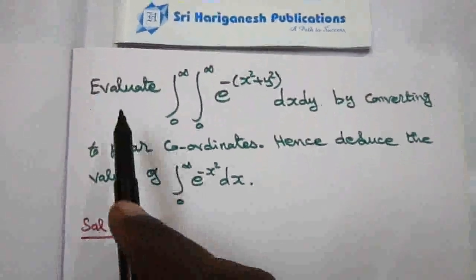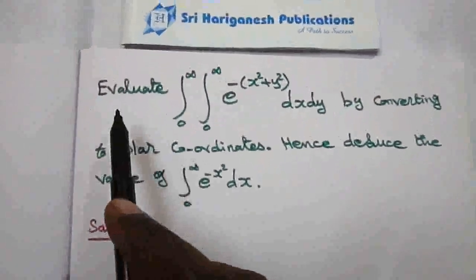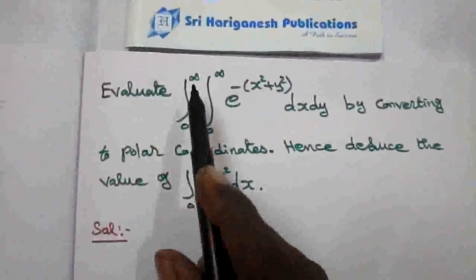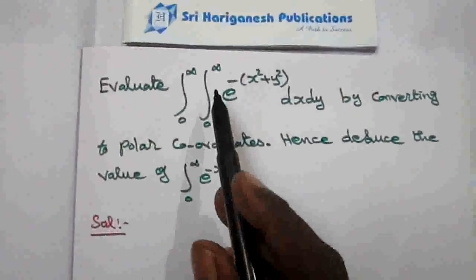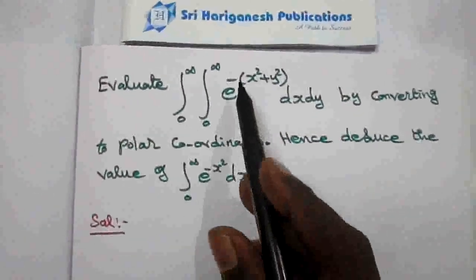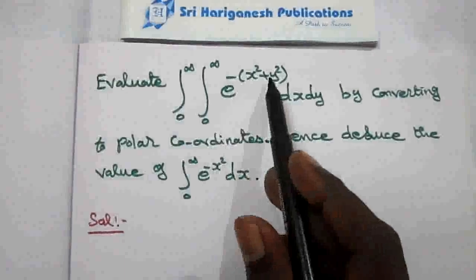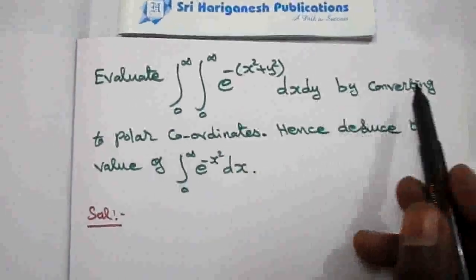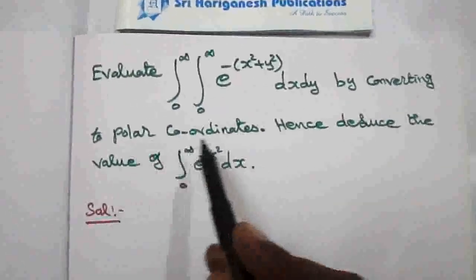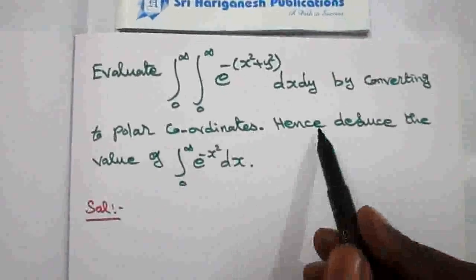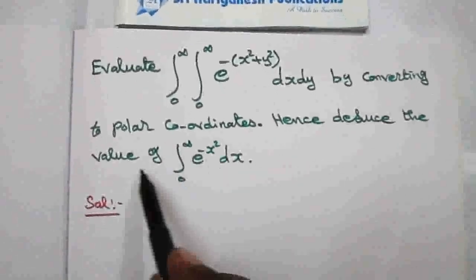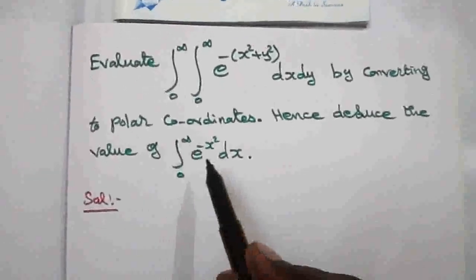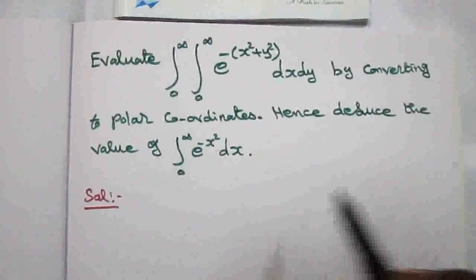And now the problem: evaluate the double integral over 0 to infinity, 0 to infinity, of e to the power minus (x squared plus y squared) dx dy, by converting to polar coordinates. Hence, deduce the value of the integral from 0 to infinity of e to the power minus x squared dx.